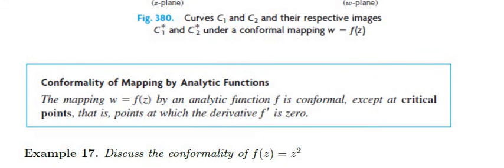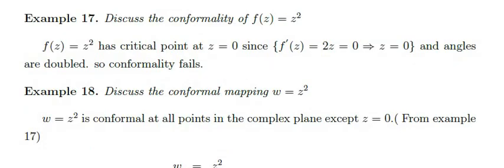This type of mapping is called conformal mapping. The mapping w = f(z) by an analytic function f is conformal except at critical points — that is, the points at which the derivative f'(z) equals zero. Being analytic implies conformality.